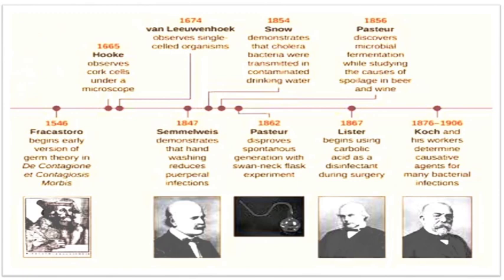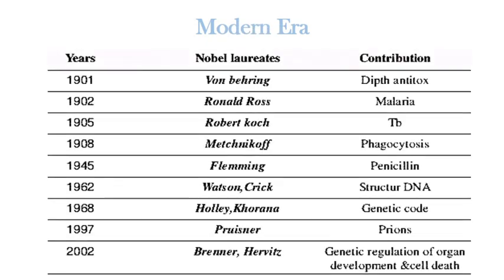This slide shows the line of discovery across the discovery era, transition era, and golden era. In the modern era after the 19th century, key discoveries include diphtheria, malaria, TB antitoxin, phagocytosis, penicillin, the structure of DNA, the genetic code, prions, and genetic regulation of organ development and cell death, made by their respective scientists.